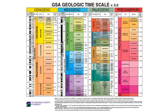The GSA timescale is shown in one of the files. Both of these charts are fairly up to date. The International Commission on Stratigraphy — ICS — is the body that issues the chronostratigraphic chart, and it is divided into four columns. You'll find four columns in the GSA timescale as well.